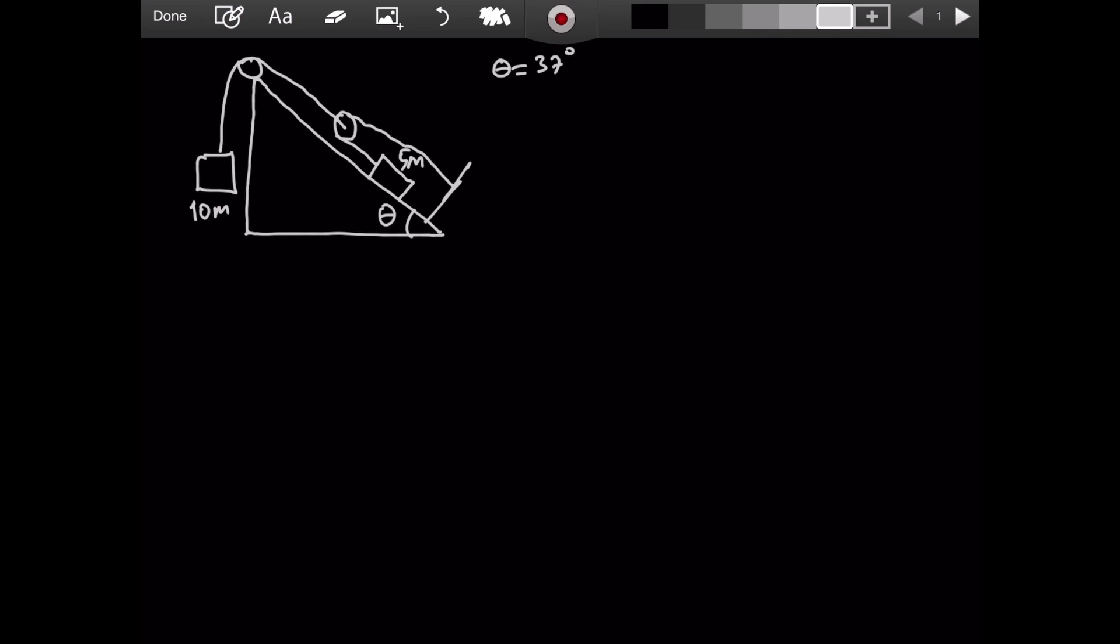And for this question, since students are asked to do all of the questions by hand without any calculator, we will have some simple numbers. For example, G, the gravitational field strength, will be 10m per second squared. It is normally 9.81m per second squared. We just rounded up so that it is easier to deal with. There will be a coefficient of friction between 5m and the incline. That friction coefficient is mu and its value is 1 over 4.